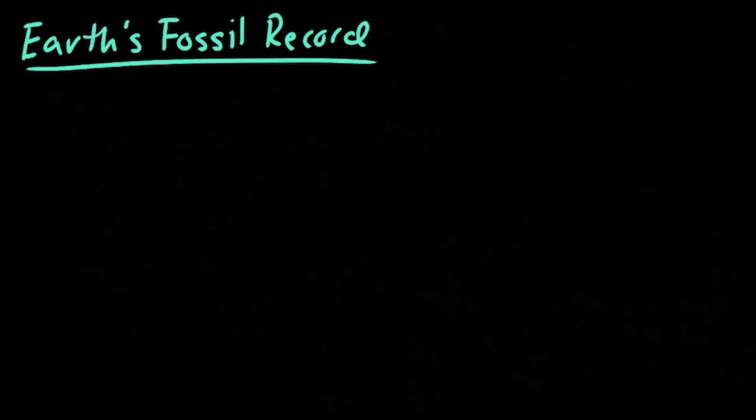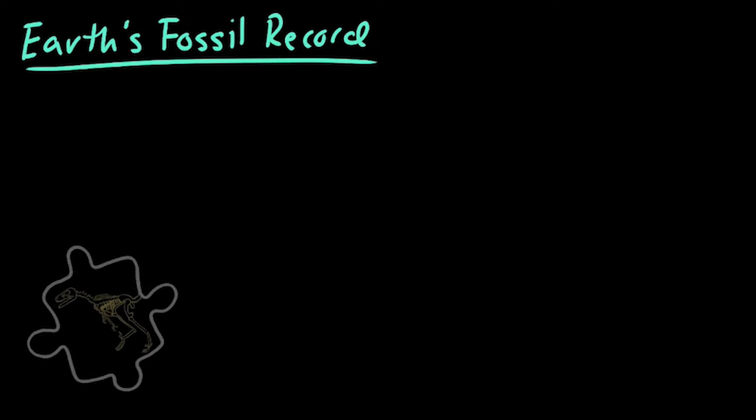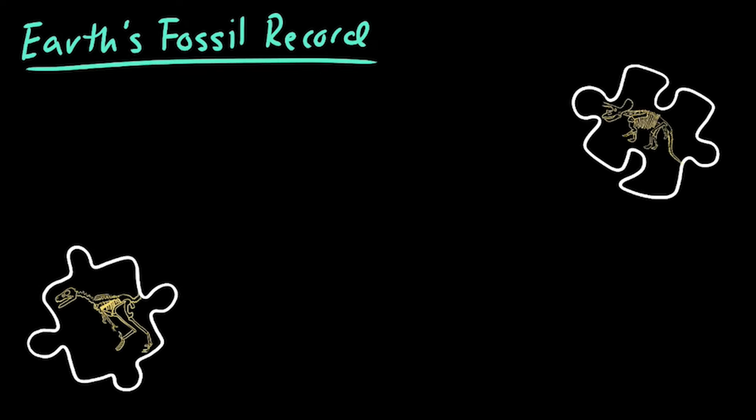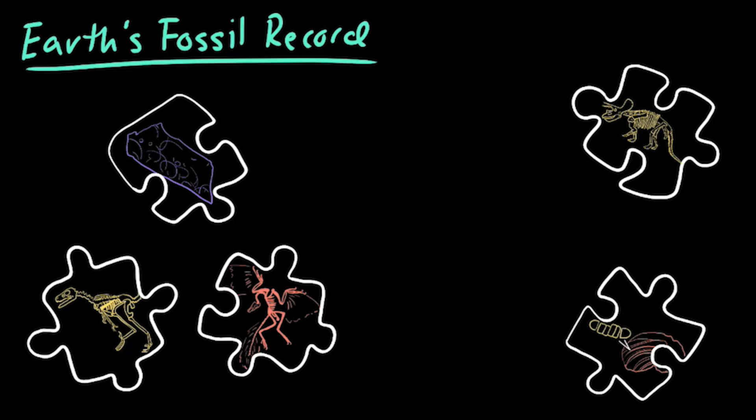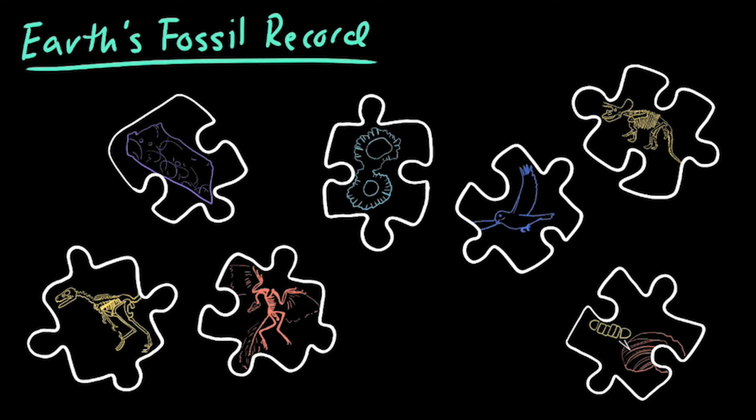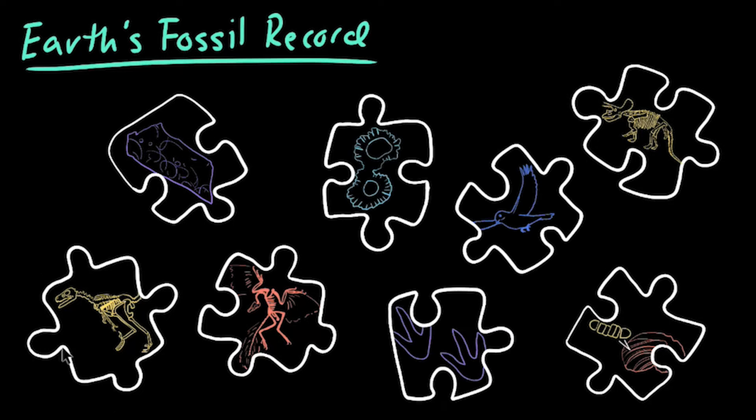And with that, you now know what Earth's fossil record is and the various patterns it can show us. Earth's fossil record is an essential tool that scientists use to piece together the history of life on Earth. And new fossils are continuously being discovered. So the fossil record is more than just a collection of fossils. It's a window into the mysteries of the past, and it's an ever-growing record of how life on Earth came to be what it is today.